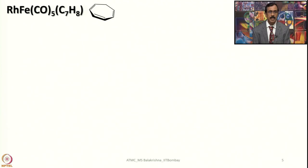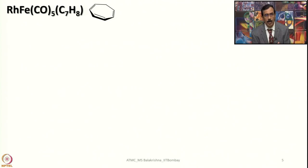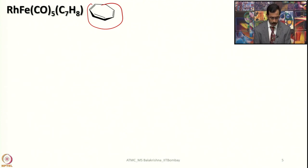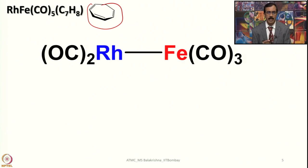Another interesting example is RhFe(CO)5(C7H8), where C7H8 is cycloheptatriene. If a system like this is present, you should assume there is a metal-metal bond. What is interesting is this ligand shares its electrons with both rhodium and iron depending on how many electrons each one needs. You should ask why I have put only 2 carbonyls on rhodium and 3 carbonyls on iron. Iron has fewer valence electrons than rhodium to begin with — iron is 3d6 4s2, whereas rhodium is 4d7 5s2. Since rhodium already has more electrons, it needs fewer ligands to reach 18 electrons, so more ligands must be added to iron.